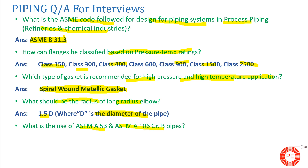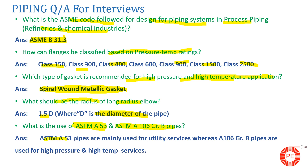What is the use of ASTM A53 and ASTM A106 grade pipe? ASTM A53 pipes are mainly used for utility services — water, compressed air, low pressure nitrogen, or low pressure oxygen. For high pressure and temperature services, we go for ASTM A106 grade. These pipes are carbon steel and are selected for steam and other high pressure, high temperature services.